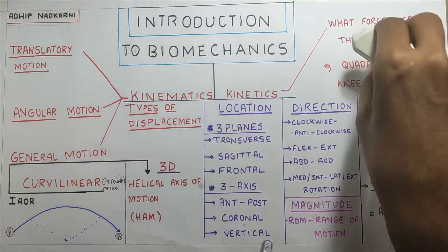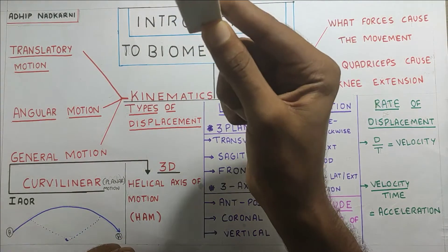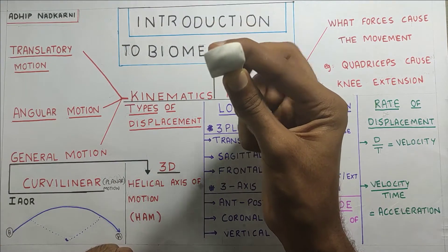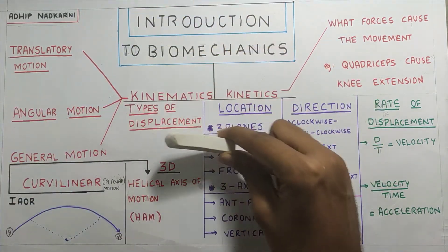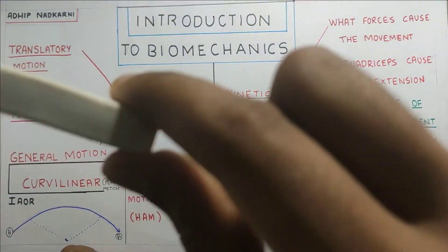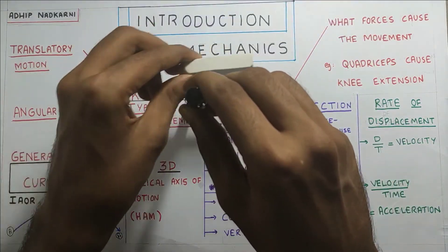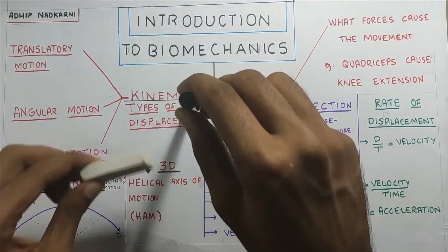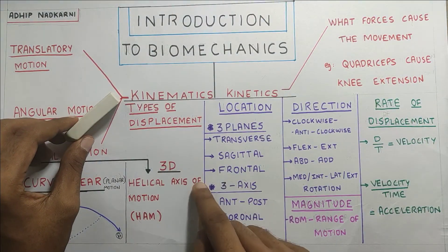In three-dimensional movement, the object moves in all three planes. For example, if the rubber is moving around the pen and at the same time going downward or coming upward toward the camera, the axis of rotation is called the helical axis of motion.